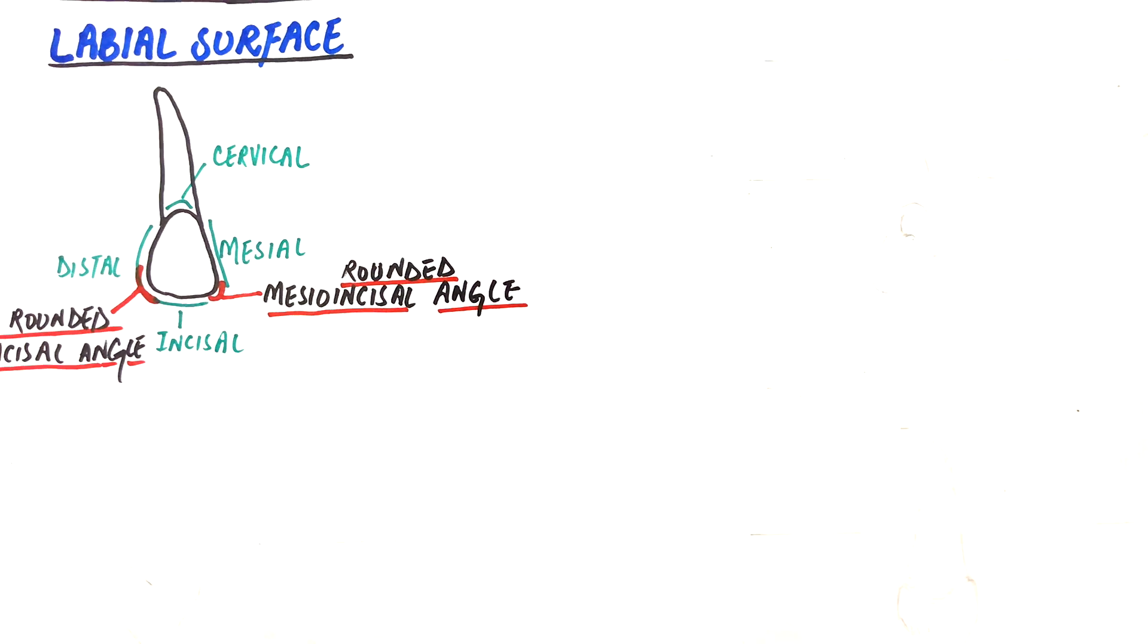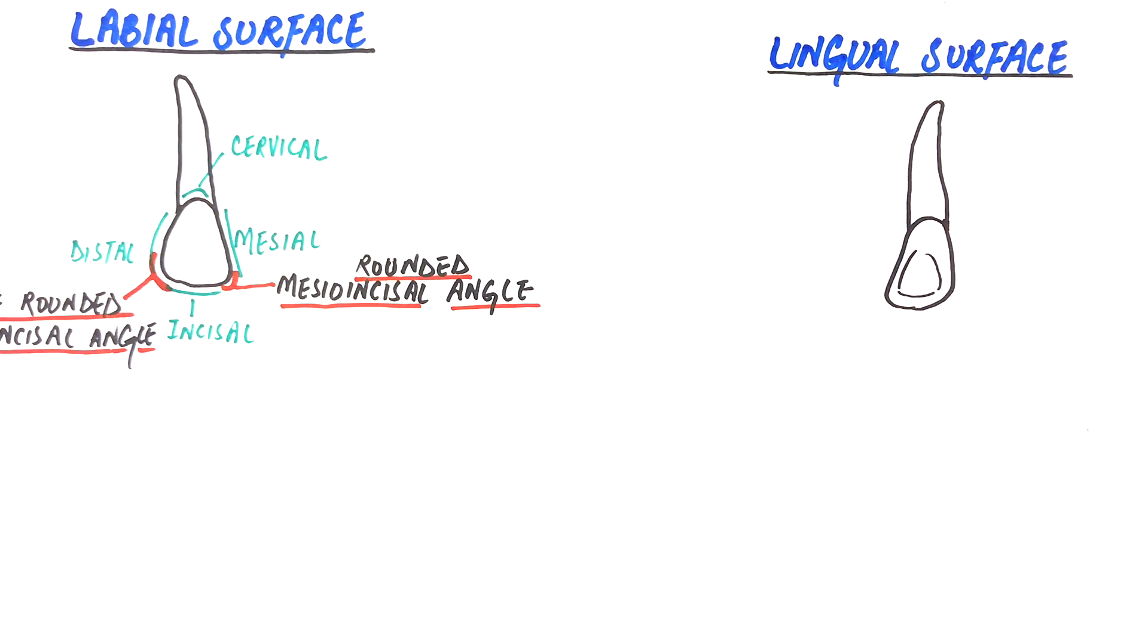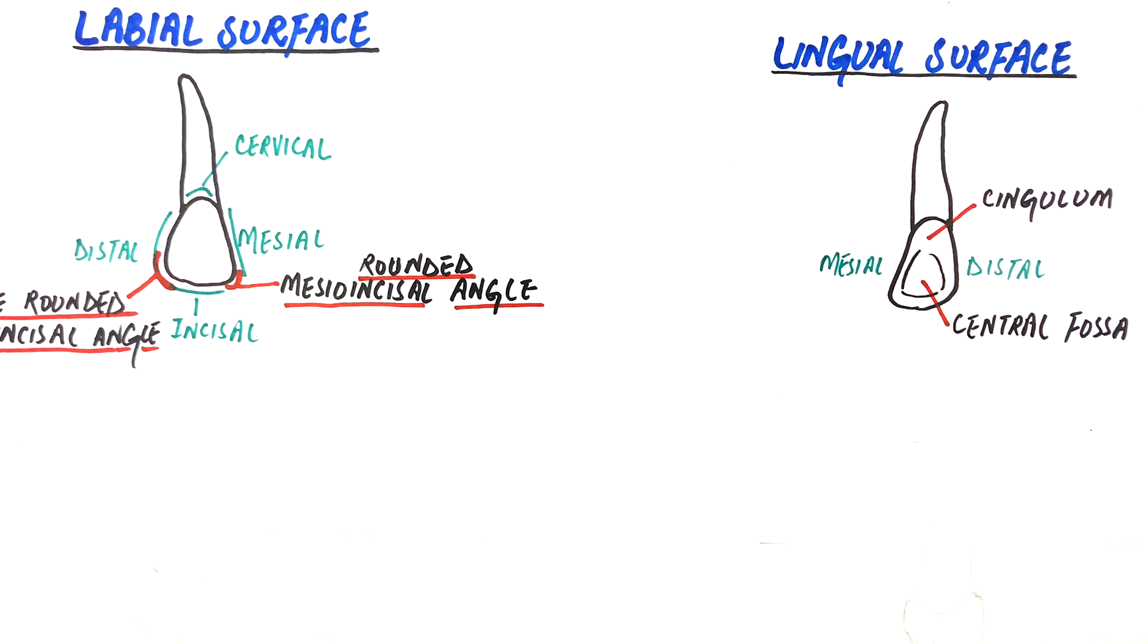From the lingual surface, the tooth has a convexity at the cervical third called the cingulum and a central fossa. The central fossa is bounded by mesial and distal marginal ridges. The cingulum is slightly more convex and the lingual fossa is deeper when compared with the central incisor. The mesial and distal marginal ridges are more pronounced.